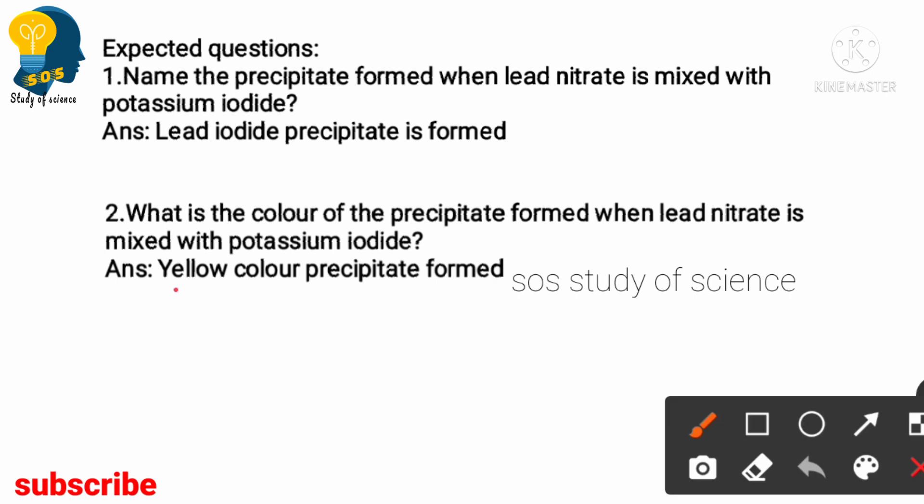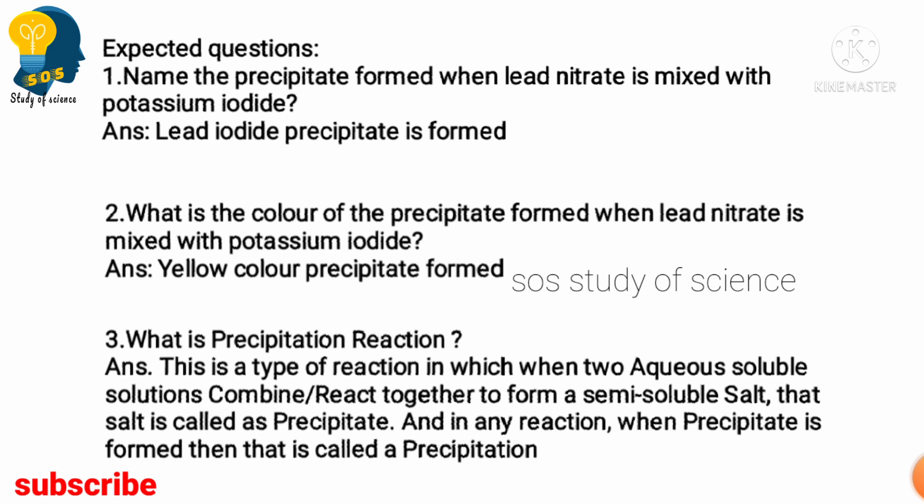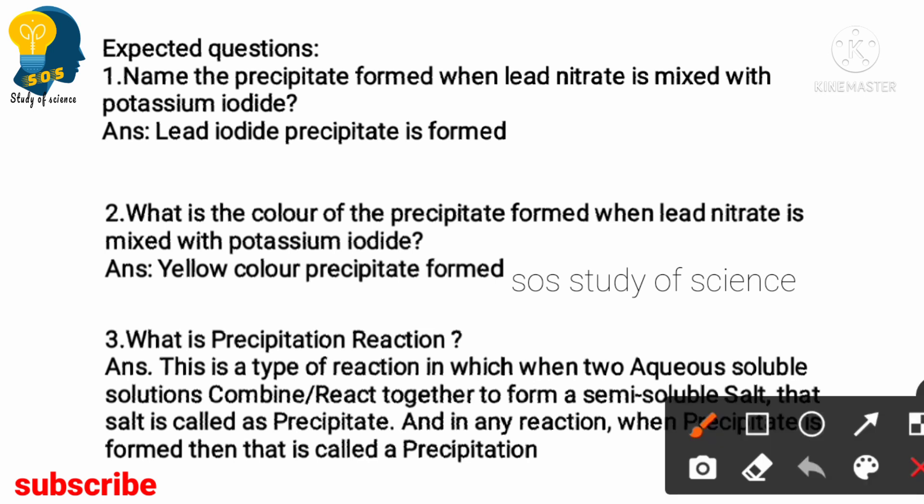The color of the precipitate is yellow. The next question: what is a precipitation reaction? This is a type of reaction in which two aqueous solutions combine to form a semi-soluble salt — in this case, lead iodide — which is called a precipitate. Any reaction in which a precipitate is formed is called a precipitation reaction.